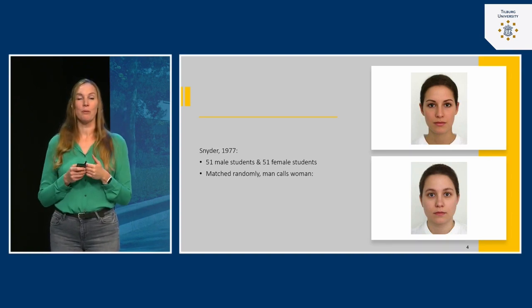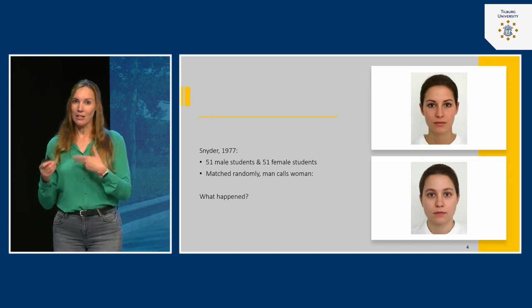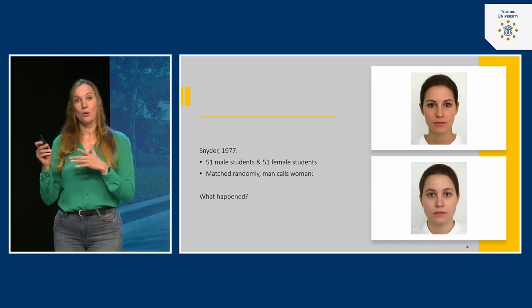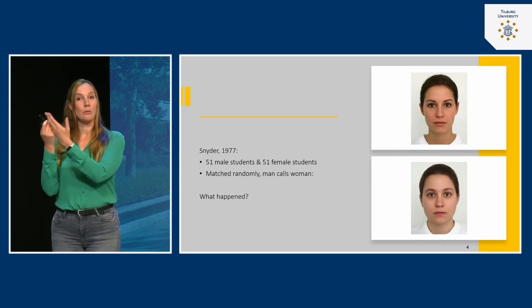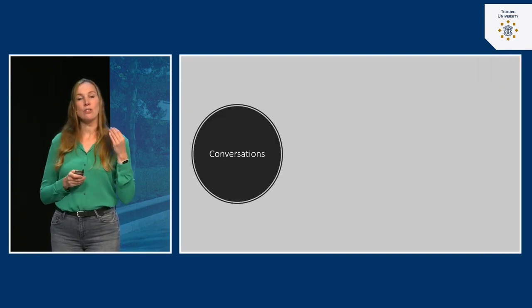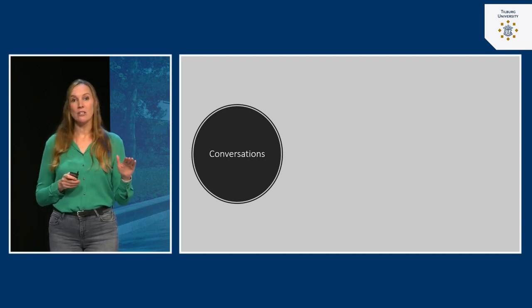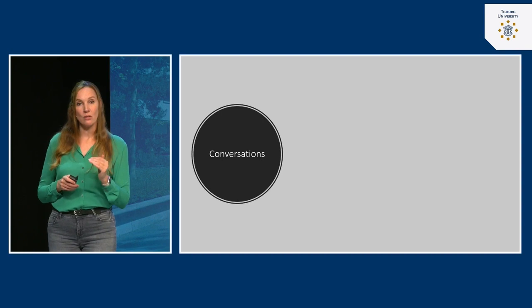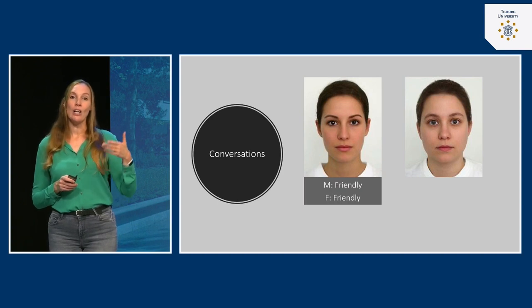By now you can probably predict what happened. The conversations were different in the two groups. Males who believed they were calling an attractive female versus those who believed they were calling a less attractive female had distinctly different conversations. These conversations were recorded and later rated by independent raters who didn't know anything about the study. Raters were asked to listen to either the male or female and judge how friendly the conversation was.